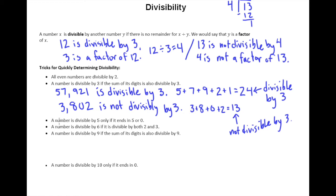This next one here, a number is divisible by 5 only if it ends in 5 or 0. A number is divisible by 6 if it is divisible by both 2 and 3. So if it works for 2 and it works for 3, it's automatically divisible by 6. And then a number is divisible by 9 if the sum of its digits is also divisible by 9.